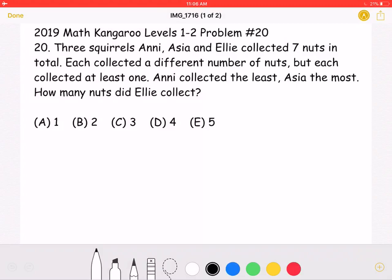Three squirrels, Annie, Asia, and Ellie, collected seven nuts in total. Each collected a different number of nuts, but each collected at least one. Annie collected the least, Asia the most. How many nuts did Ellie collect?